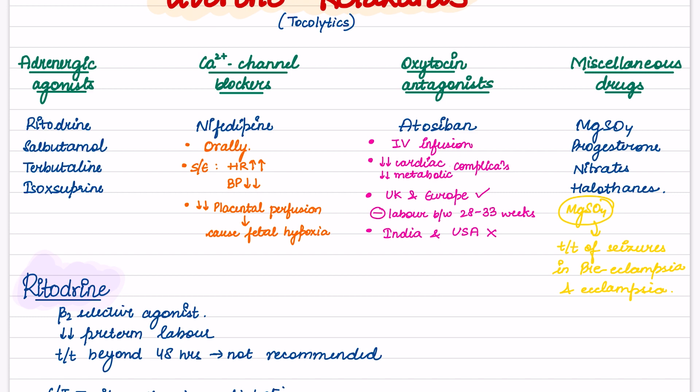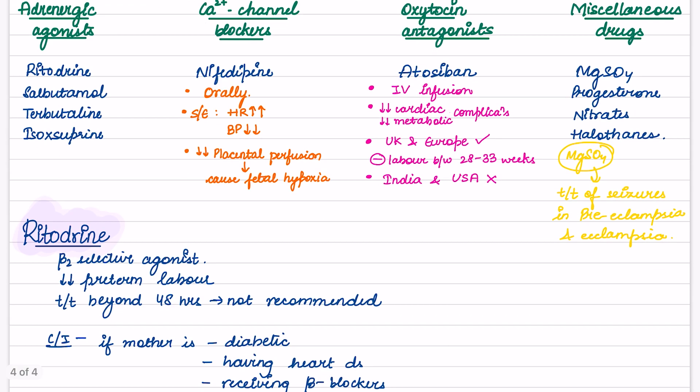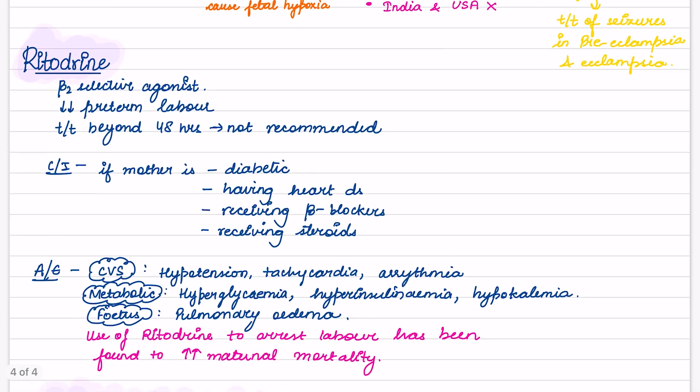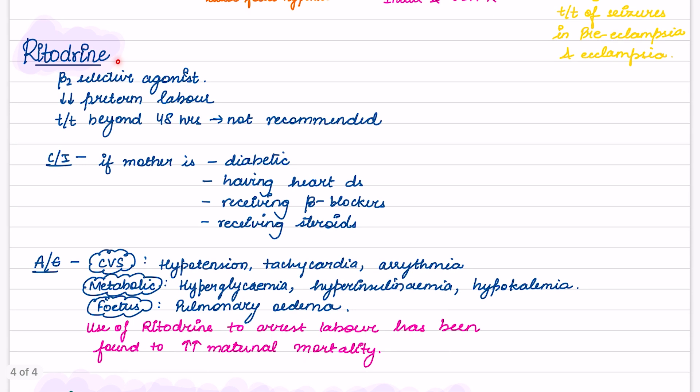Miscellaneous drugs like magnesium sulfate, they are used in the treatment of seizures in preeclampsia and eclampsia. Now, adrenergic agonists: we have rytodrine. It is a beta-2 selective agonist, decreases preterm labor. Treatment beyond 48 hours is not recommended. Contraindication if mother is diabetic, having heart disease, receiving beta blockers or receiving steroids.